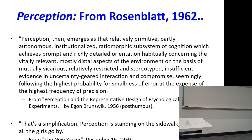Here's a very nice long description of what perception is: 'Perception then emerges as that relatively primitive, partly autonomous, institutionalized, ratio-morphic subsystem of cognition, which achieves prompt and richly detailed orientation, habitually concerning the vitally relevant, mostly distal.' It's one sentence.